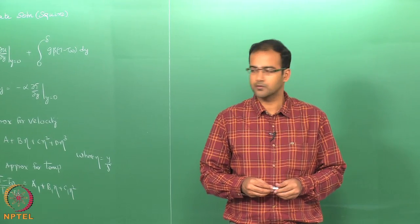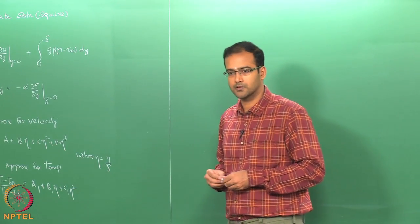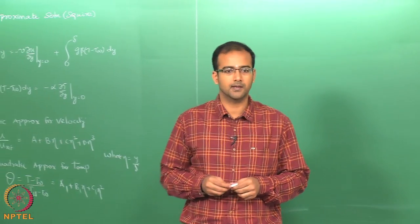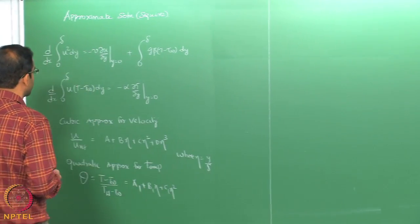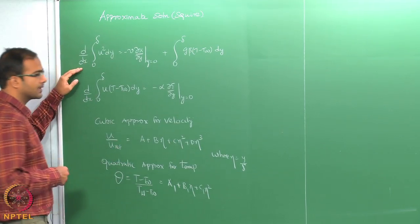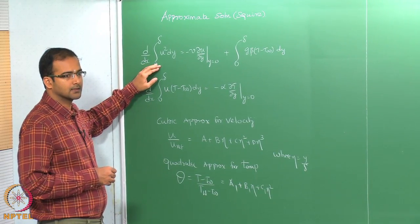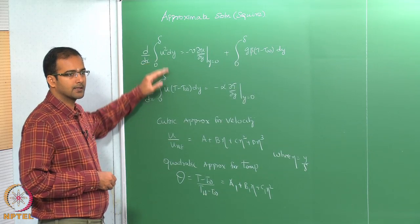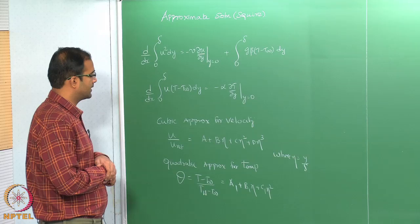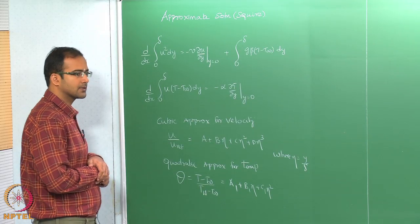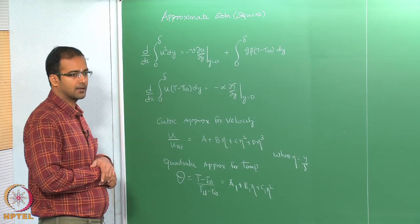Good morning. Today we will continue our discussion on the approximate solution which was originally attempted by Squire. In this case, we write down the integral formulation of the Boussinesq equations for natural convection. We have the momentum integral equation and the energy integral equation which was derived, and the approximation comes in the form of making a guess for the velocity and temperature profiles.